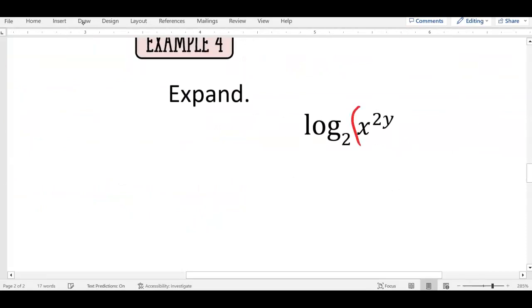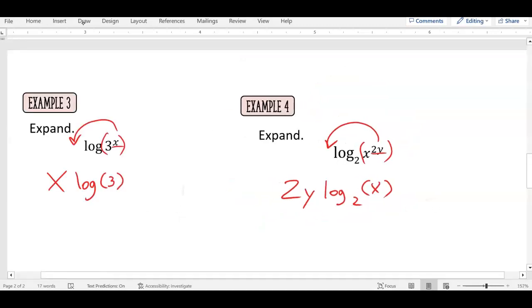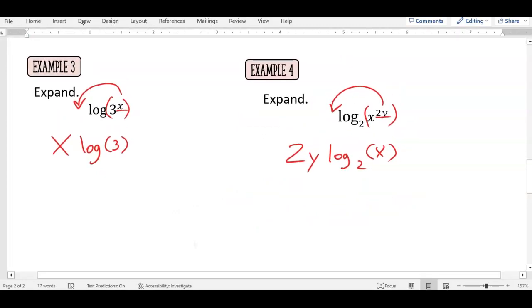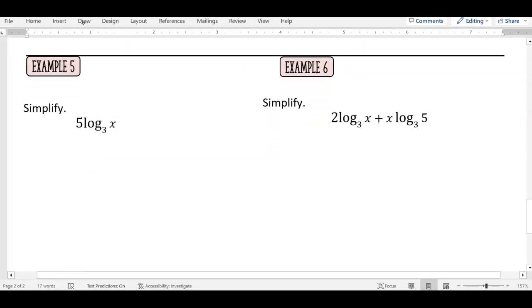All right, let's try this one. In the argument is there an exponent? That whole 2y is going to go up front. So 2y log base 2 of x. Cool, I hope everyone's getting how simple this can be.